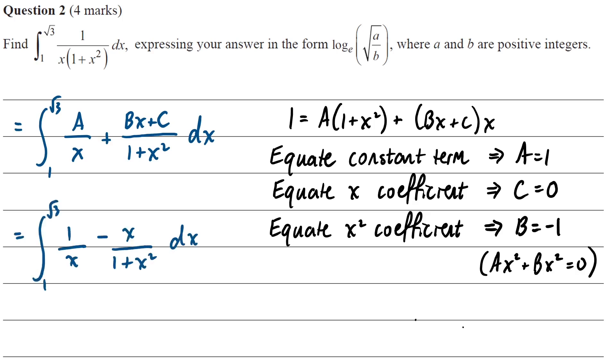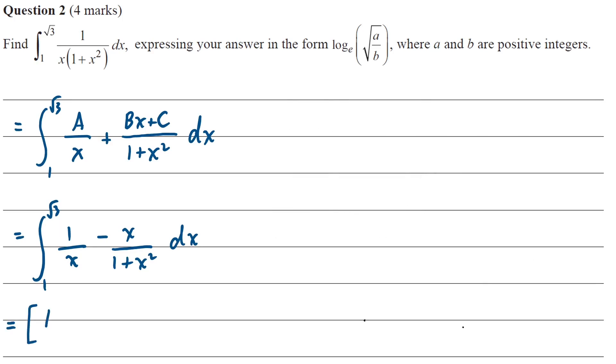Once we sub in a, b, and c, this is what our integral becomes. For the first integral, that's just going to be a logarithm. We do need the modulus there. And for the second integral, I would like to rewrite that. So we have the derivative of 1 plus x squared on the top, which is 2x, and let's adjust for that with a constant of a half out the front.